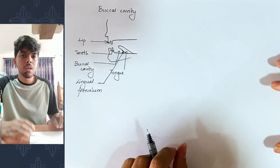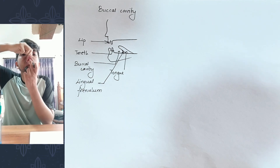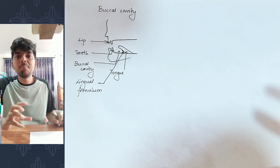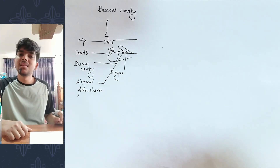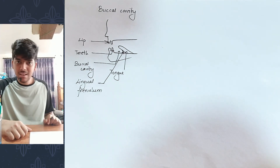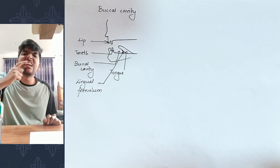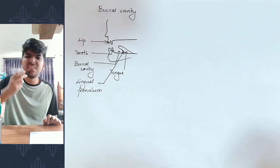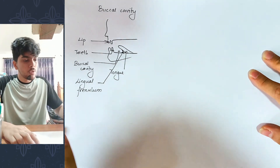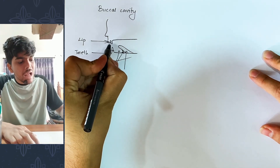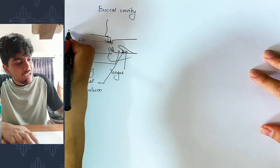This is a frenulum. This is the labial frenulum. The labial frenulum connects the lip to the gum. This labial frenulum is part of the vestibule region.